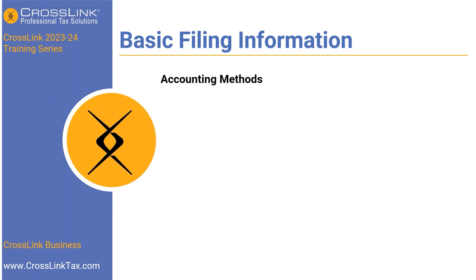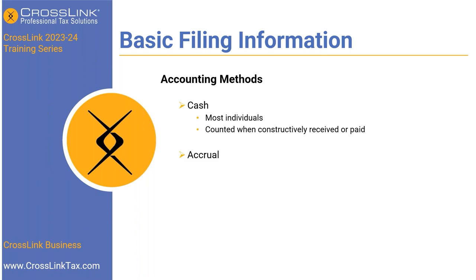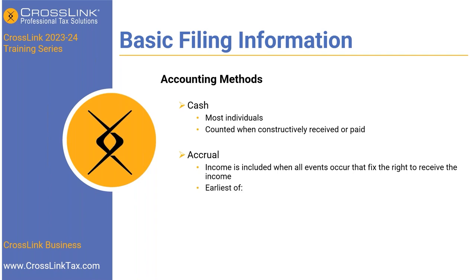Next, accounting methods. The first is cash — most individuals use this, where income is recorded when constructively received or paid. You also have accrual, where income is included when all events occur that fix the right to receive the income — the earliest of performance, payment due, or receiving a payment. And finally, there's a hybrid method which has elements of both.